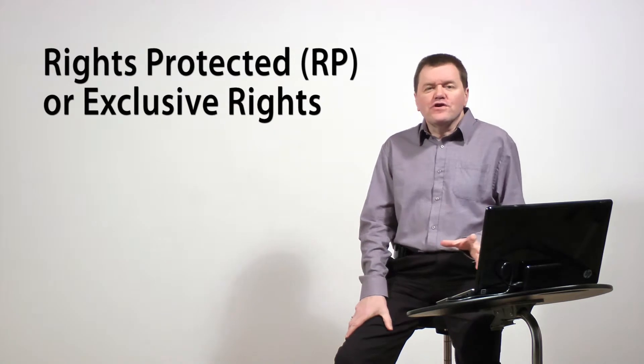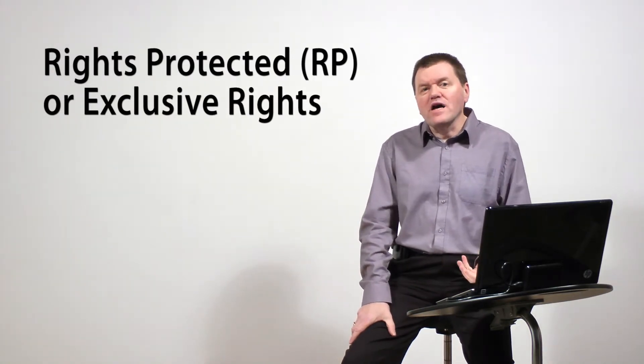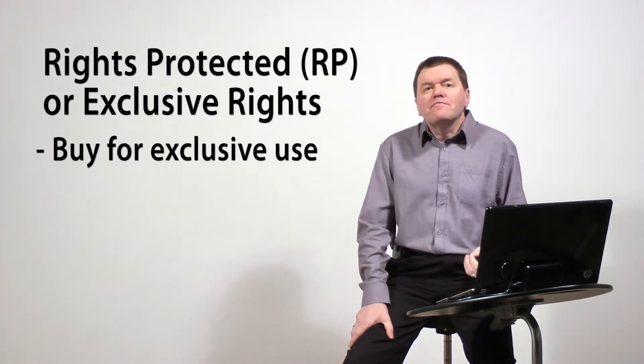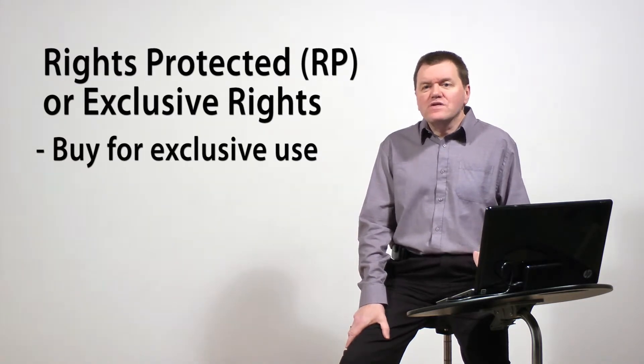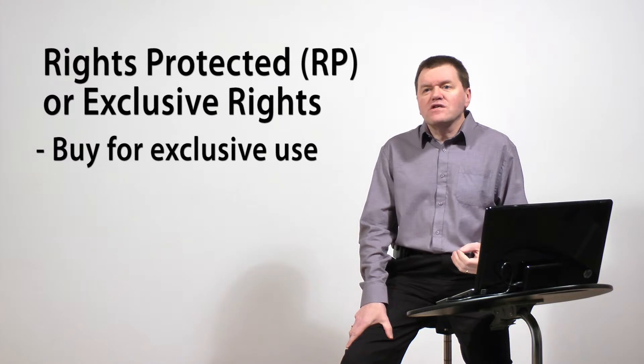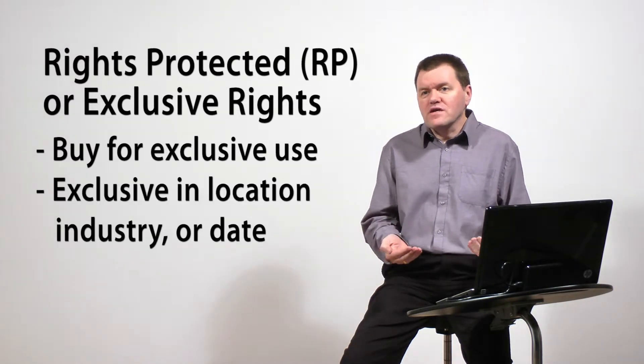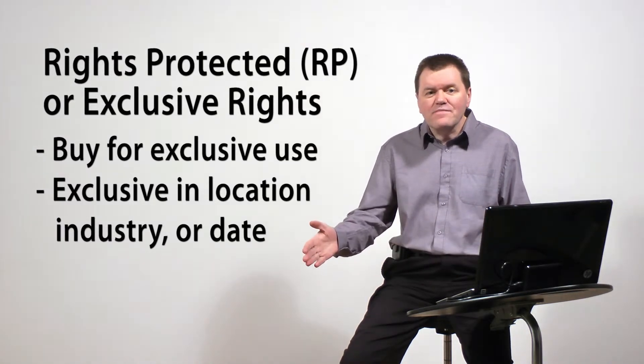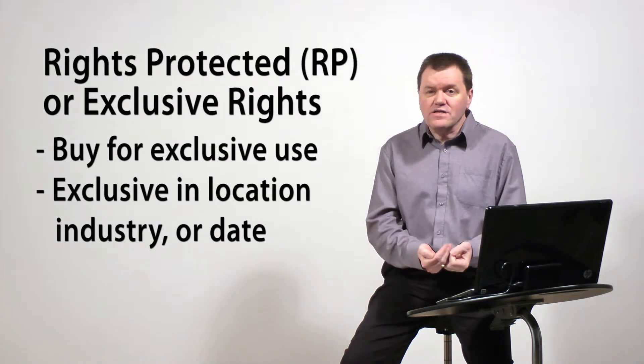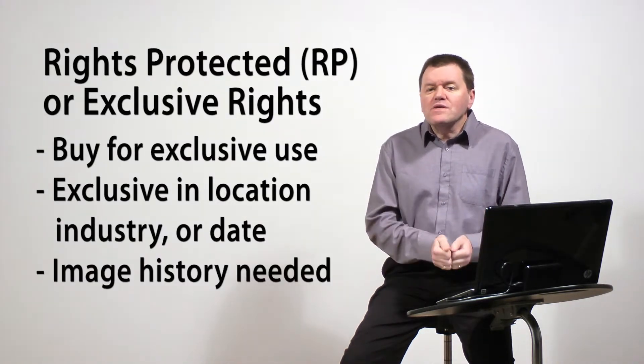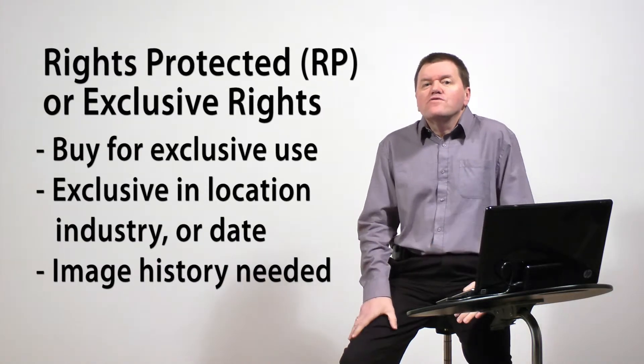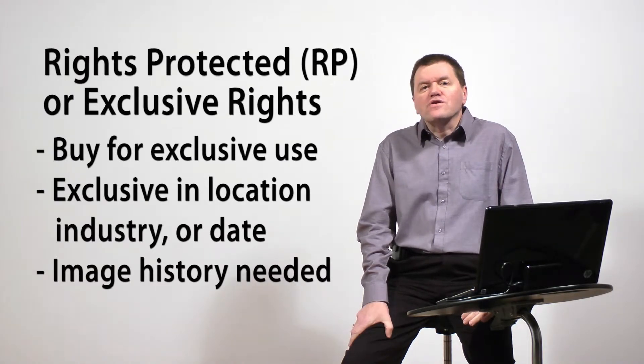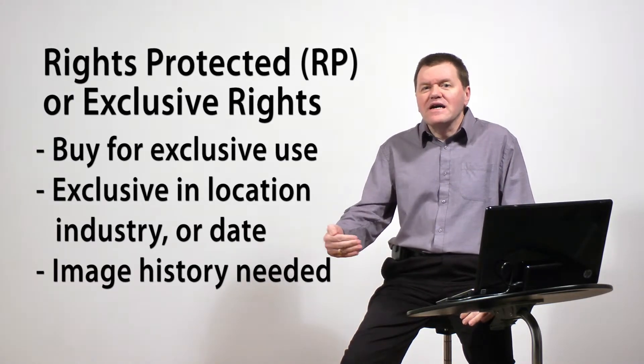There is a third form of licensing, and it's actually a subset of rights-managed, and that's called rights-protected, or exclusive rights. And here, the person is buying exclusivity to the image. That might be exclusivity in terms of where they're using it, which country or which continent. It might be exclusive over a period of dates. It might be exclusive within an industry sector. In order to sell something as rights-protected, you need to know what the image has been used for in the past, to make sure it doesn't cut across any of the rights that you are now selling in an exclusive way.